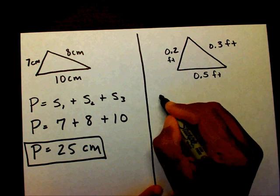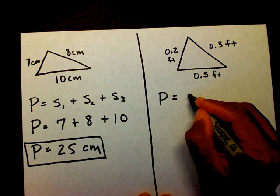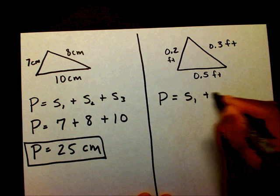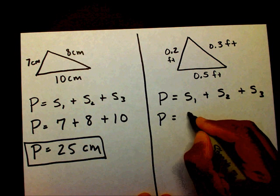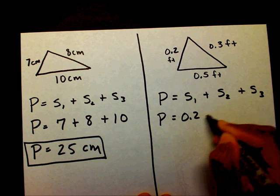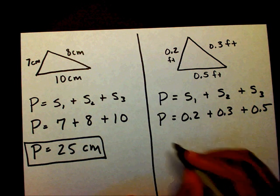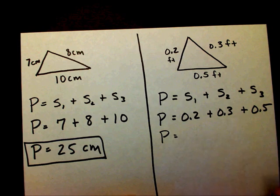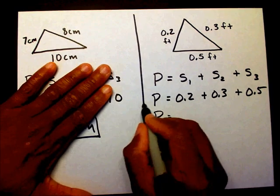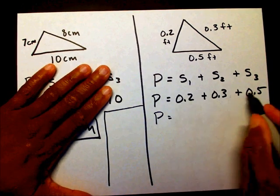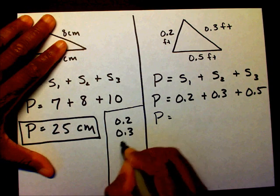Let's find the perimeter for this triangle. This time we have decimals. We're still going to go through the same process — we're going to add side one plus side two plus side three. So the perimeter is going to be zero point two plus zero point three plus zero point five. Let me add them over here in this area.